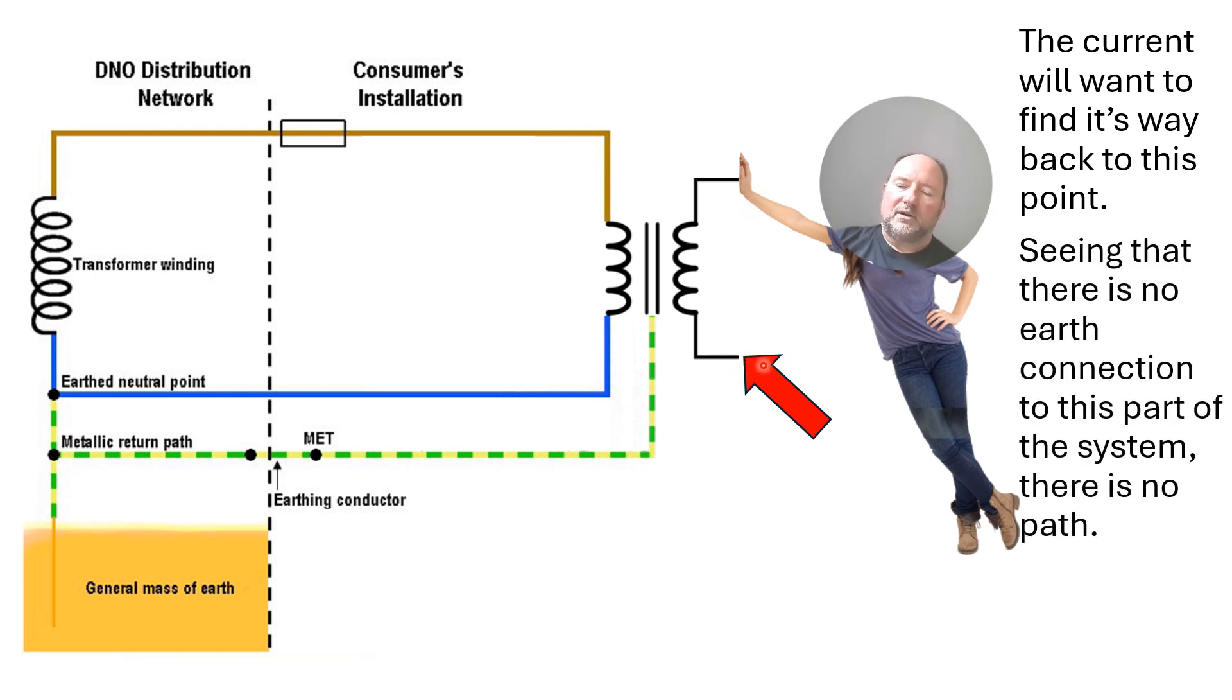Now, seeing that this secondary part here has absolutely no connection to Earth, then the current cannot find its way through the general mass of Earth back to this point. And since then there's no path for the current to take, then there is reduced risk of shock.